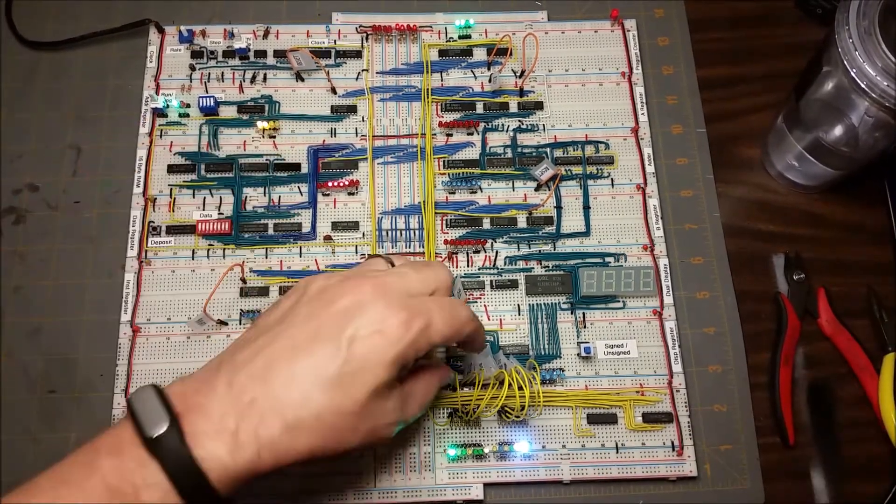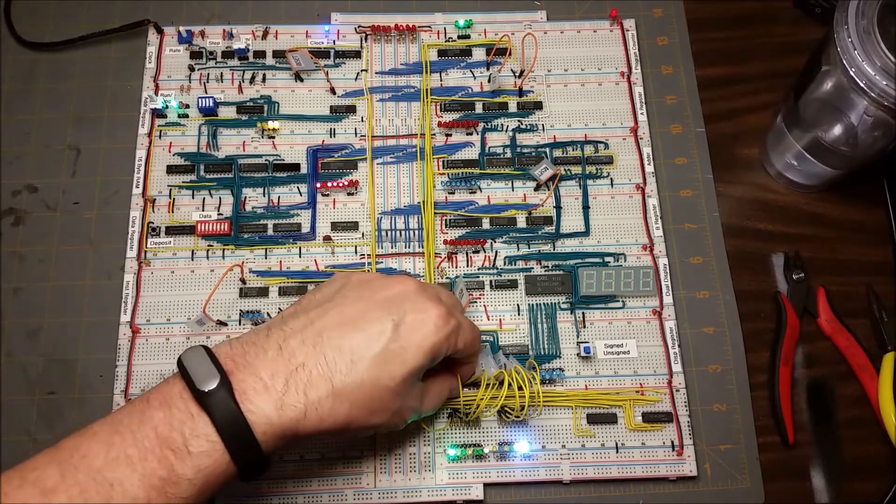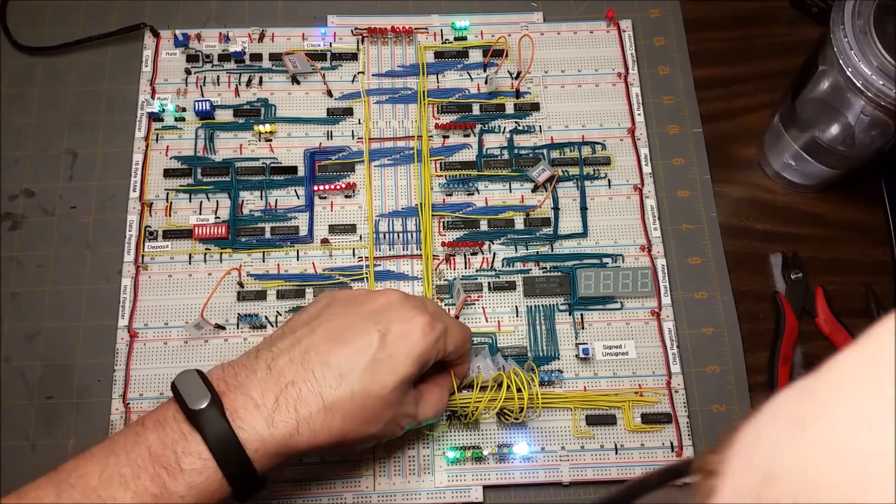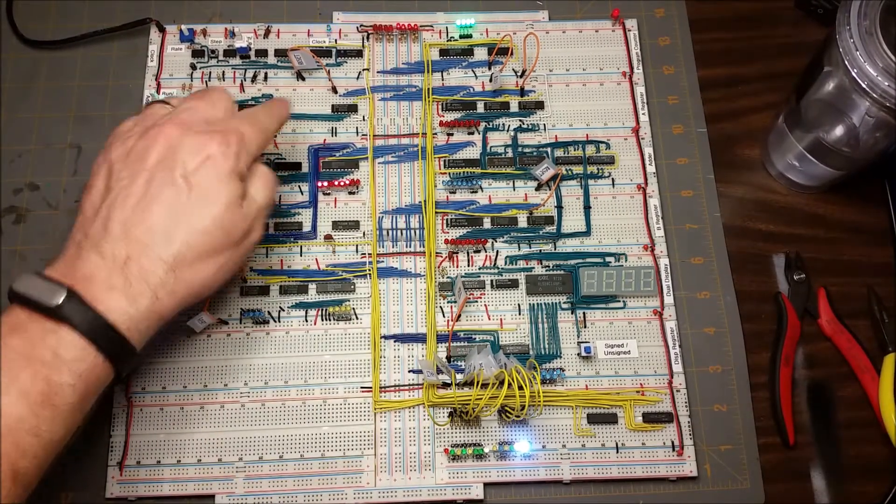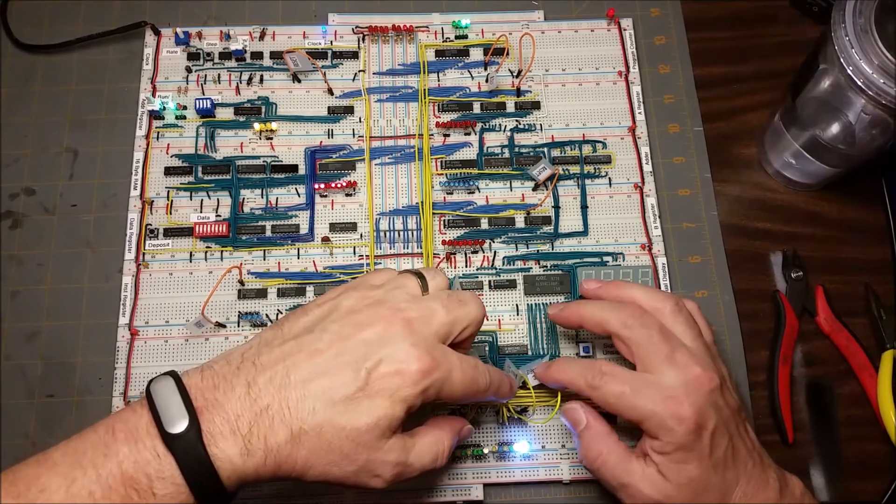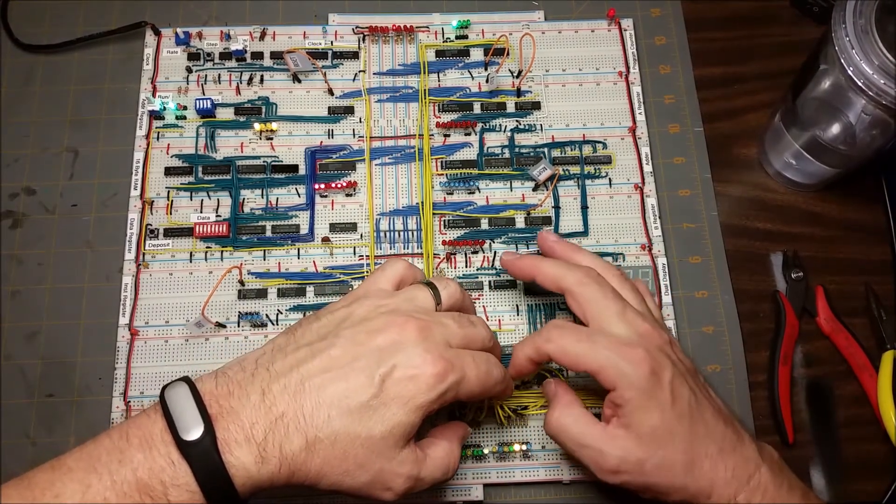Okay, you can see we're latching the data bus into the address register. Let's just stop it somewhere at random. Okay, we now have a value in the address register. Now we can stop the program counter counting and the output on the data bus.